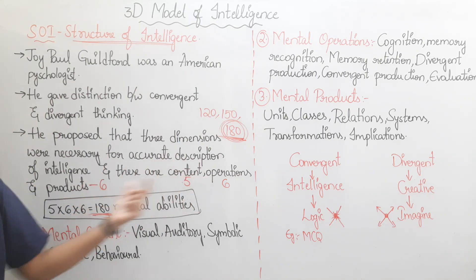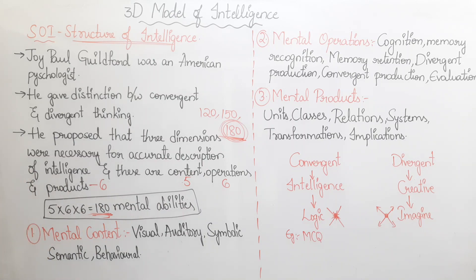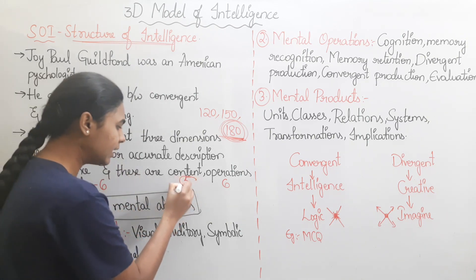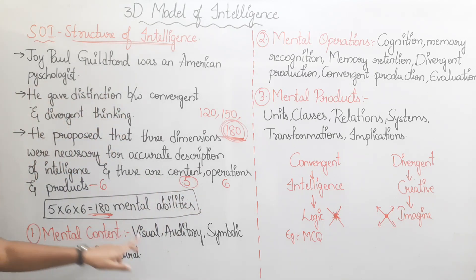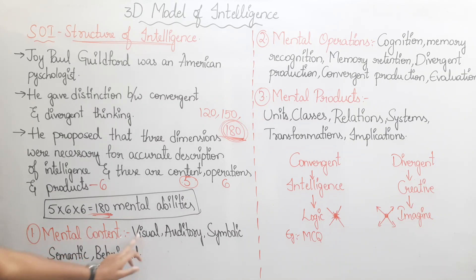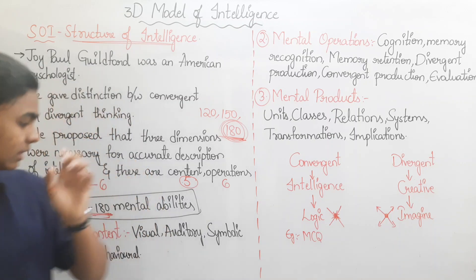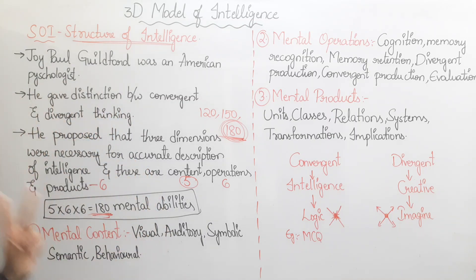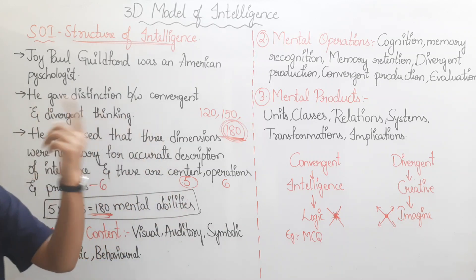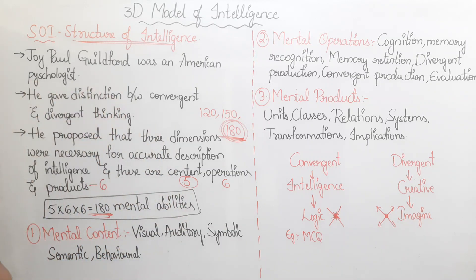The first dimension is Mental Content, which has five mental abilities. First is Visual — information we understand through images or visuals. Second is Auditory — information we understand through sound.